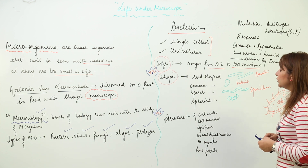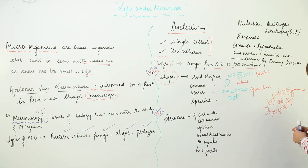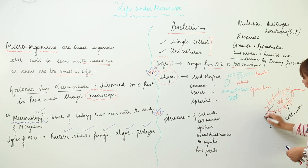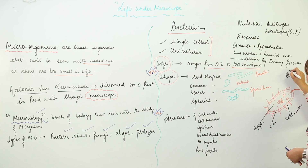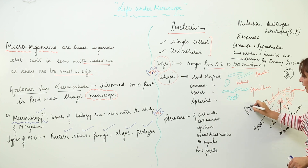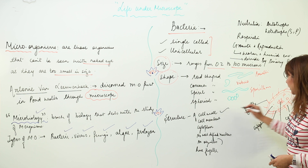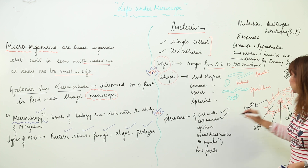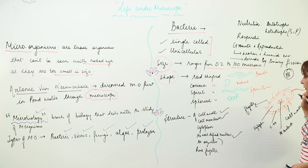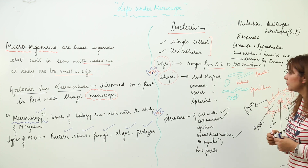The basic structure of bacteria includes: a cell wall as the outer covering, a cell membrane inner to it, cytoplasm as the fluid inside, and no well-defined nucleus — the nuclear material lies naked and is not enclosed in a nucleus. There are also thread-like structures called flagella. Because bacteria are prokaryotic cells, they do not possess any membrane-bound organelles.